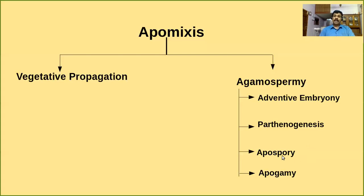Naturally, the embryo sac is haploid. But in the case of apospory, the embryo sac may always be diploid, because the embryo sac has been developed from diploid cells like nucellus and integuments.